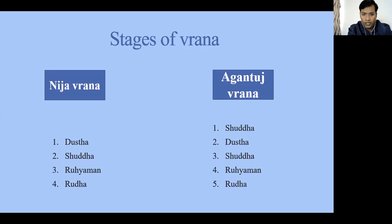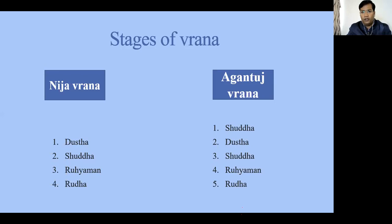Sushruta mentioned that in Nija-Vrana the four stages are in this order, while in Agantaj-Vrana the first stage will be Shuddha-Vrana. For example, in surgery when we perform an operation, the first wound made in the OT is always a Shuddha-Vrana. But if it becomes infected, then it is Dushta-Vrana; otherwise it goes directly into Rohimana-Vrana and then Rudra-Vrana.